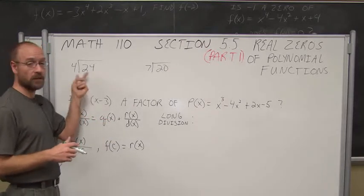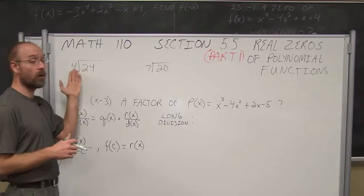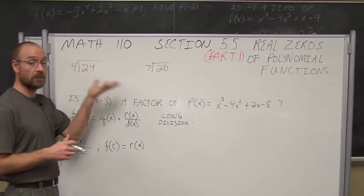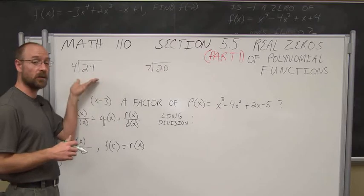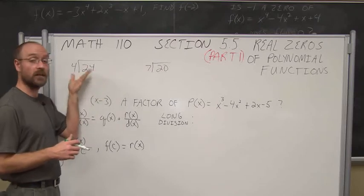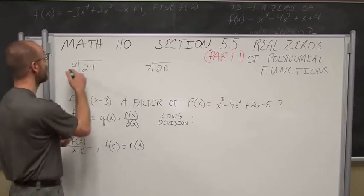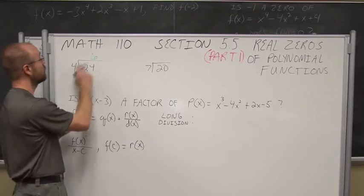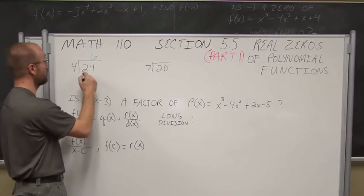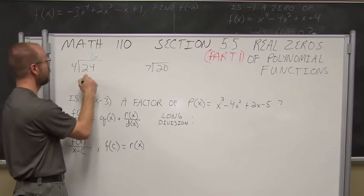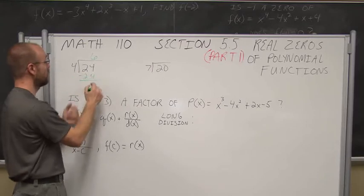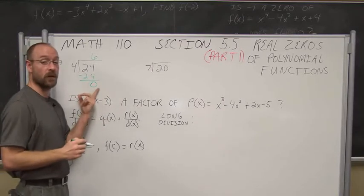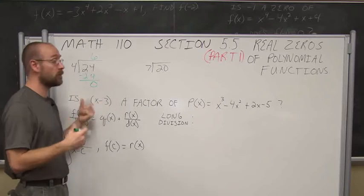When we talk about factors, I know that 4 is a factor of 24. 4 times 6 is 24, which tells me that 24 is evenly divisible by 4. If I do long division here, 6 factors of 4 is 24. When I do that difference, I have a remainder of 0. So that tells me it's evenly divisible.